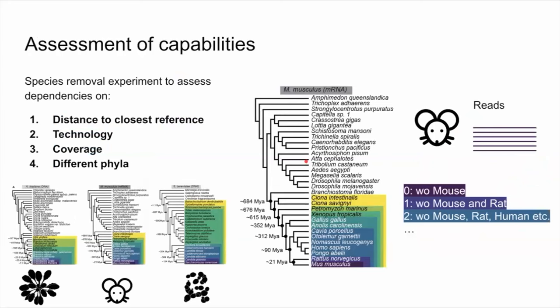Now that we have an understanding of how this pipeline works, we need to show that it's actually doing a good job. For that, we need to characterize it well in terms of how it performs depending on the distance to the closest reference — because we said we need to use some prior knowledge. There are also different sequencing technologies to consider, different coverage levels ranging from very little to a lot of data, and performance across different phyla.